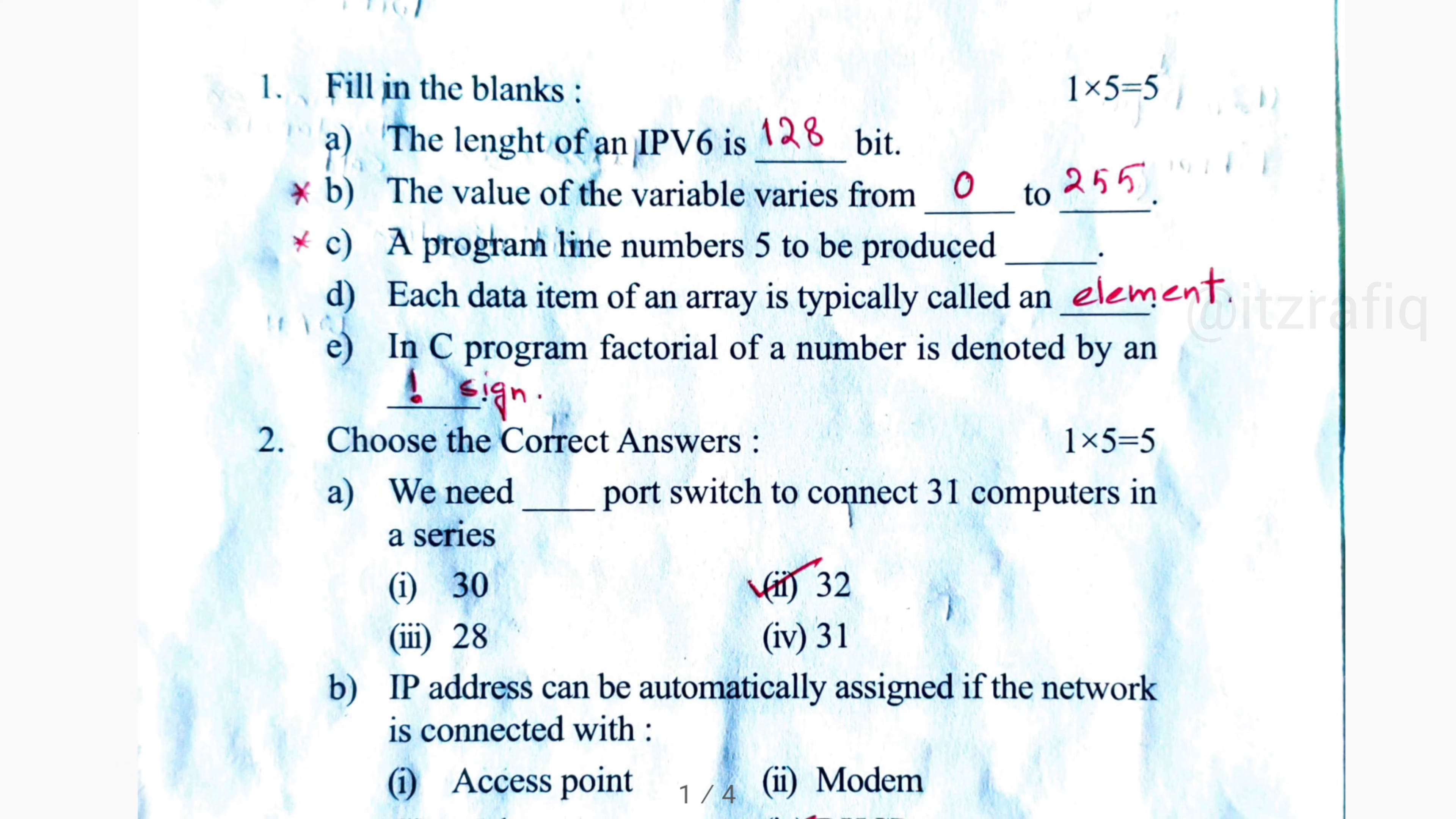Then third question, the question is wrong. So if anyone knows the answer, you can write in comment section. Number D answer will be element and number E it will be exclamatory sign.